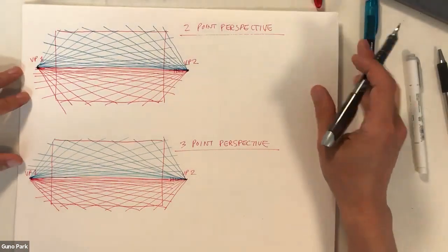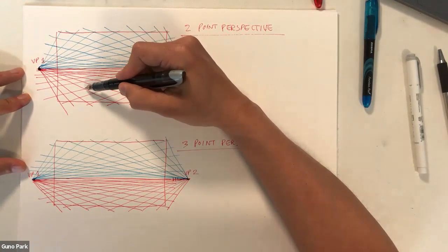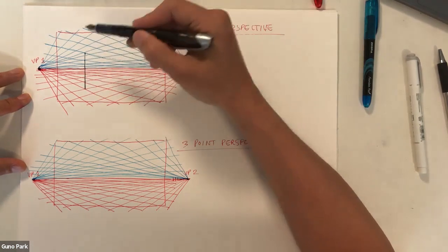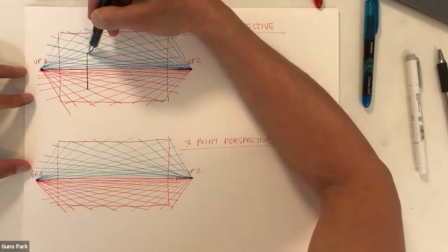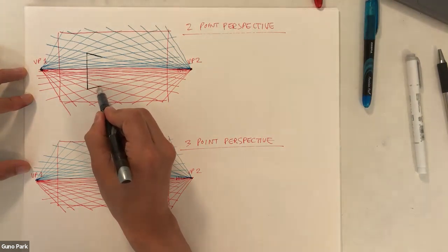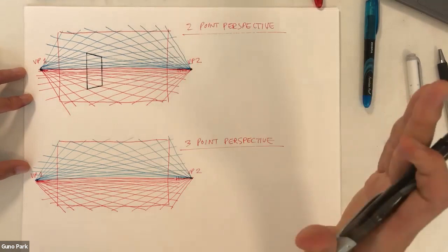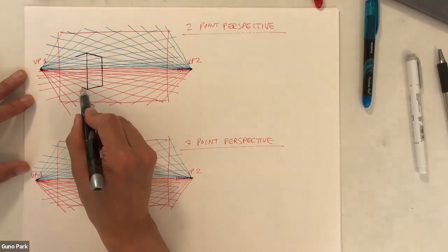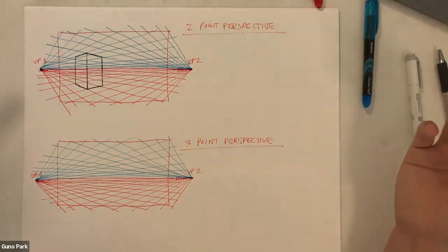Following vanishing point one and two, I complete the two-point perspective box. A fun variation: if the box is above you in the sky, you'll see the bottom of it — just fill in the diamond shape and add vertical lines up. You can also draw a box on the ground where you see the top, following those angles to both vanishing points. Now you have a box in two-point perspective.